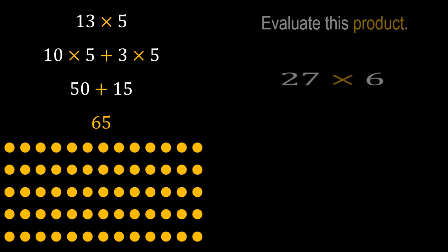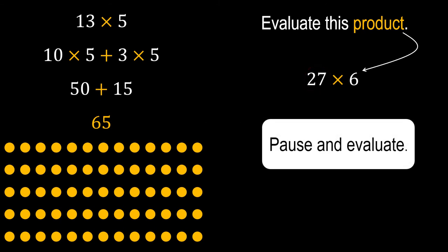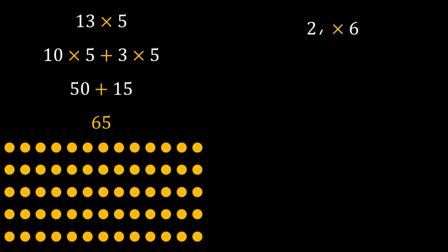Next, find the product of 27 and 6. Make sure you expand 27 to make this multiplication easier. 27 can be expanded as 20 and 7.